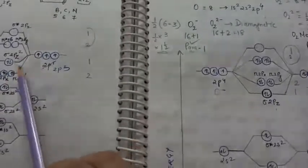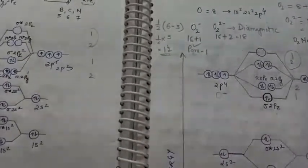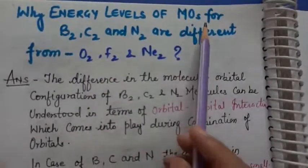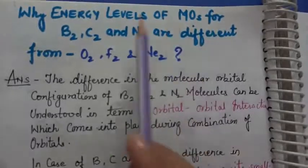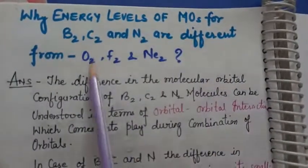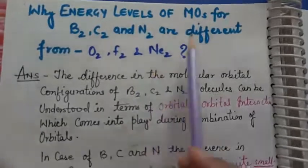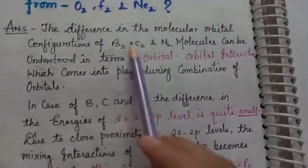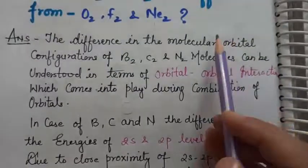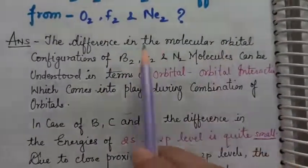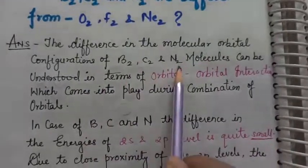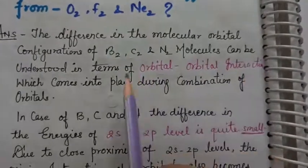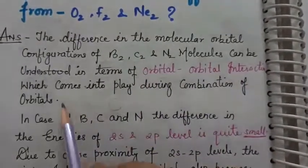So this was the question: what is the difference between oxygen, fluorine and neon? The answer is actually something like this. This difference in the molecular orbital configuration of boron, carbon, nitrogen molecules can be understood in terms of orbital-orbital interaction, which comes into play during combination of orbitals.